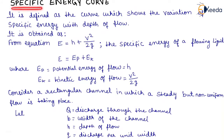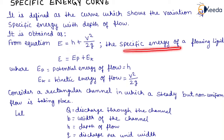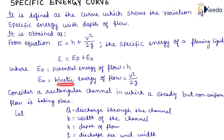Next, the specific energy curve. It is defined as the curve which shows the variation of specific energy with depth of flow. The specific energy is obtained as E equals H plus V² upon 2G, which equals EP plus EK, where EP is the potential energy of flow (that is H) and EK is the kinetic energy of flow (that is V² upon 2G).